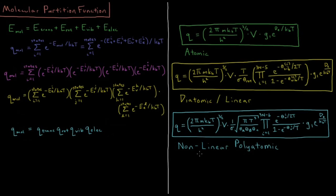For nonlinear polyatomic molecules, the translational partition function is the same: (2πmkT / h²)^(3/2) V, and the electronic function is g₁ e^(D_e / kT). The rotational part is (1/σ) × √(π T³ / (θ_A θ_B θ_C)), where θ_A, θ_B, and θ_C are the three rotational temperatures obtained from tables. There are 3n − 6 vibrational partition functions multiplied together, each with their own vibrational temperature θ_vib,i: e^(−θ_vib,i / 2T) divided by (1 − e^(−θ_vib,i / T)).